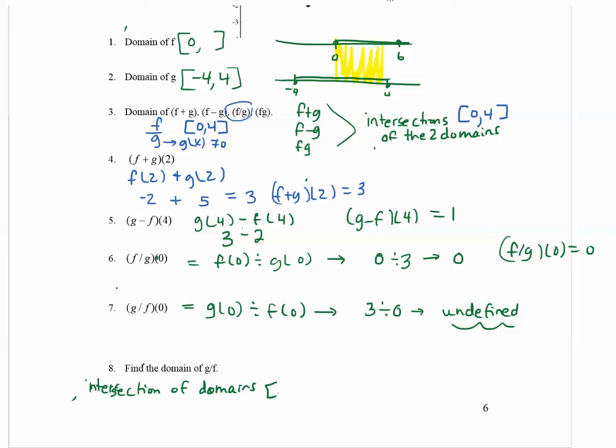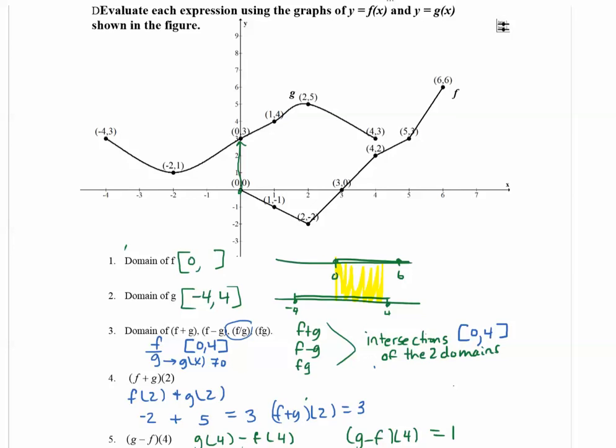So now if I do g divided by f, I need to see from the graph, does f of x equal 0? I don't want it to be equal to 0. So let's go to the graph.